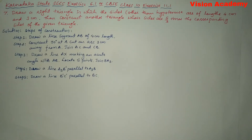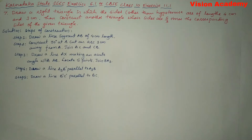Draw a right triangle in which the sides other than hypotenuse are of length 4 cm and 3 cm. Then construct another triangle whose sides are 5/3 times the corresponding sides of the given triangle.